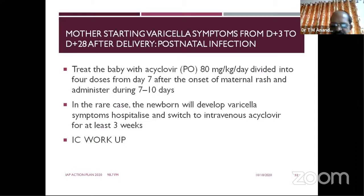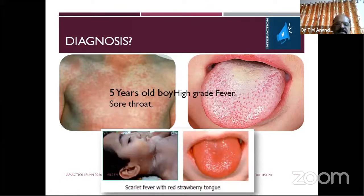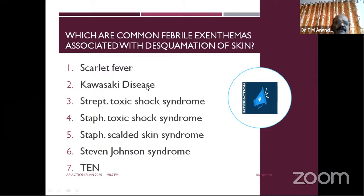Another common condition: a five-year-old boy with high-grade fever and sore throat. You can see a beefy red tongue. The characteristic desquamation is also very important. When you get a case with desquamation, think about scarlet fever, Kawasaki disease, measles — which also shows good desquamation — and toxic shock syndrome by Staphylococcus or Streptococcus, and Stevens-Johnson syndrome. All these conditions show desquamation.